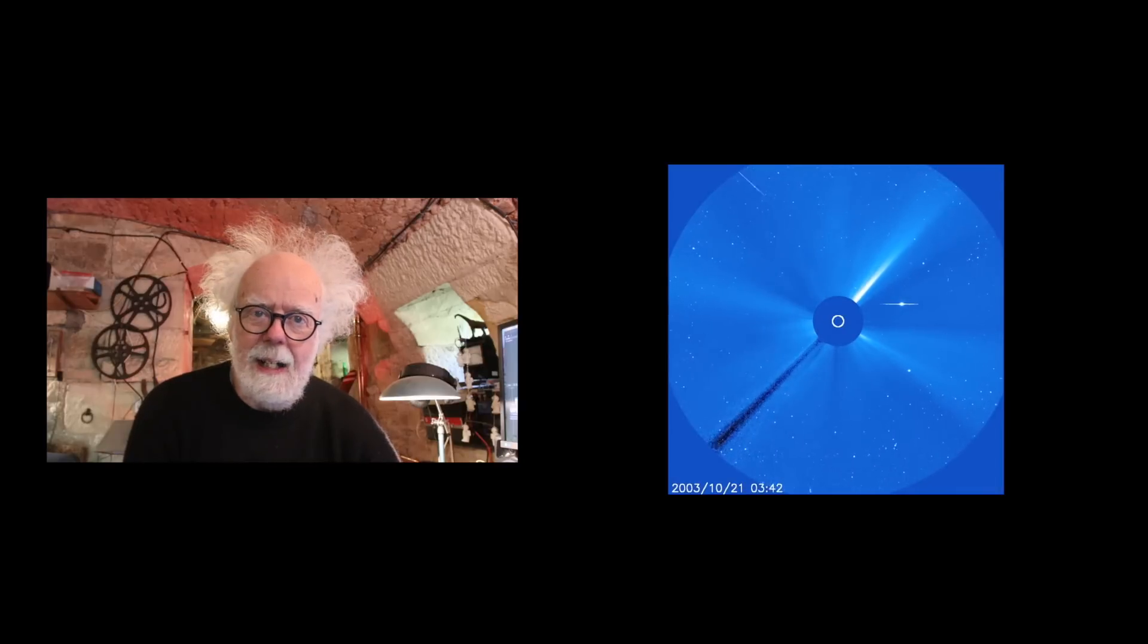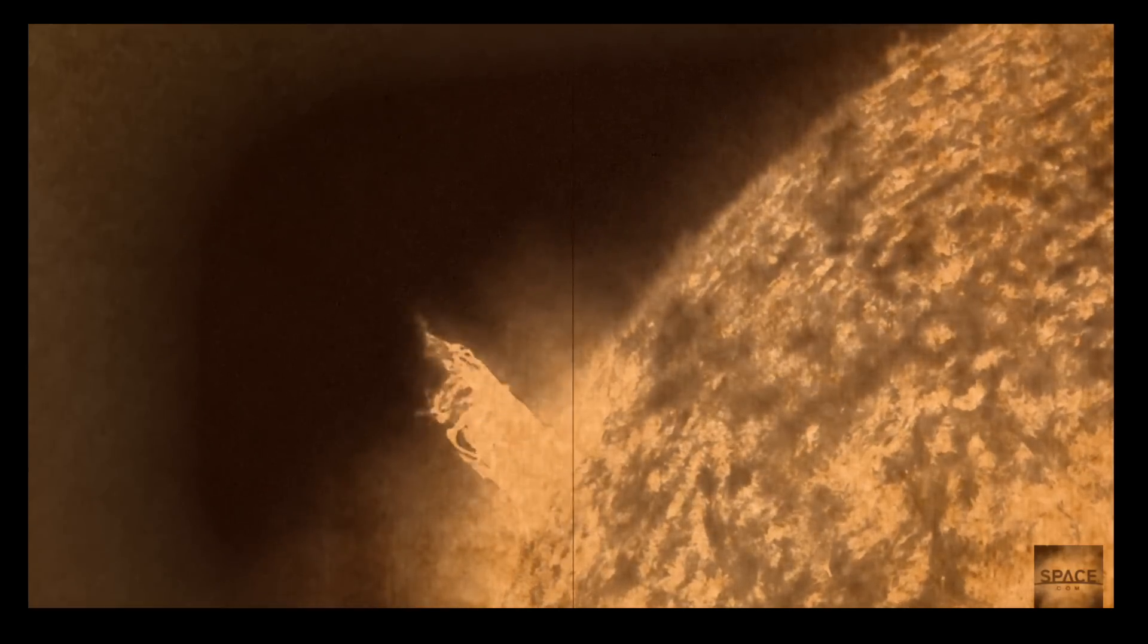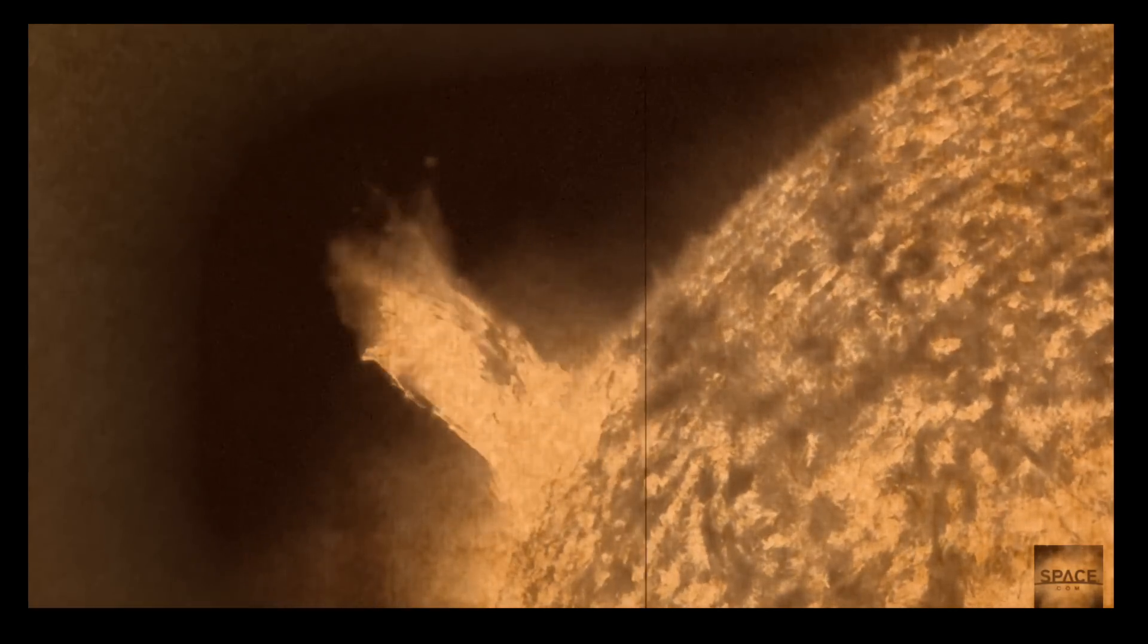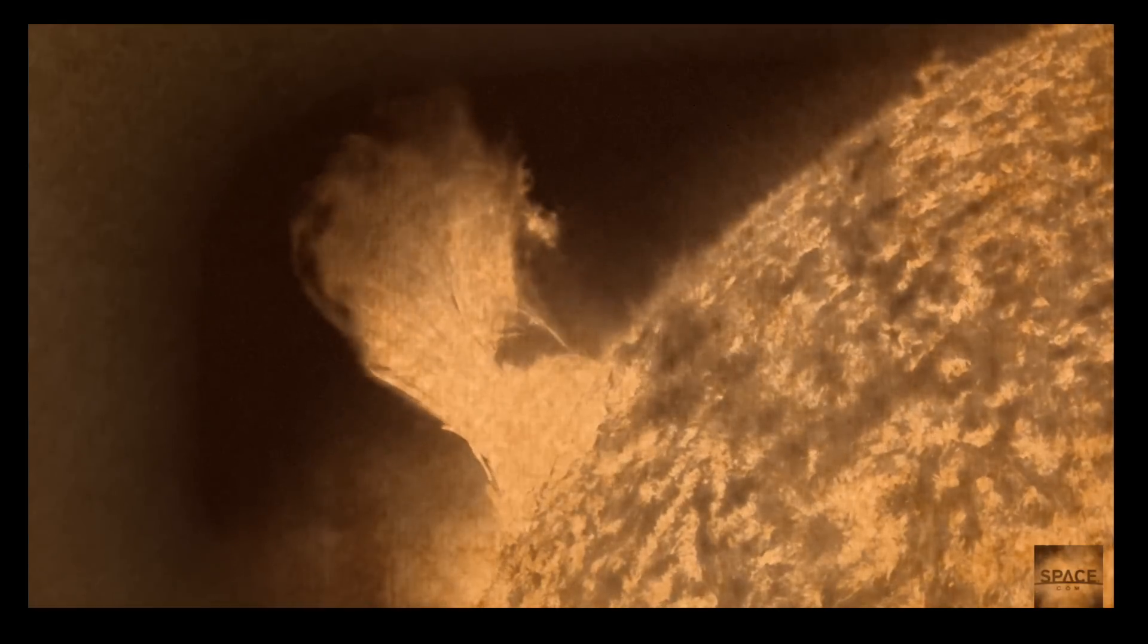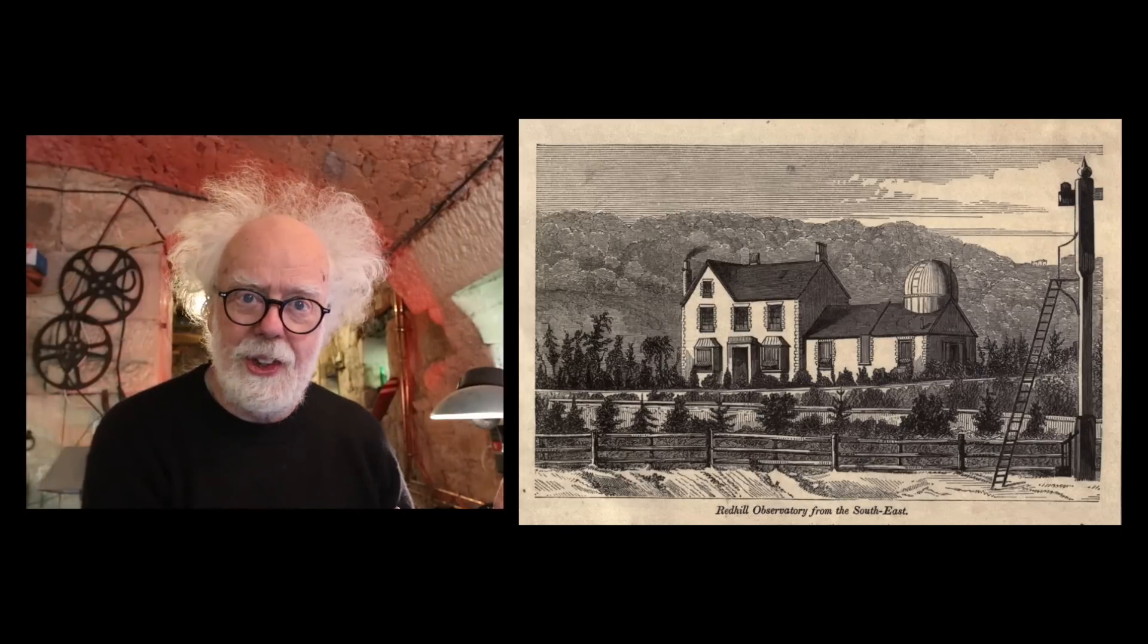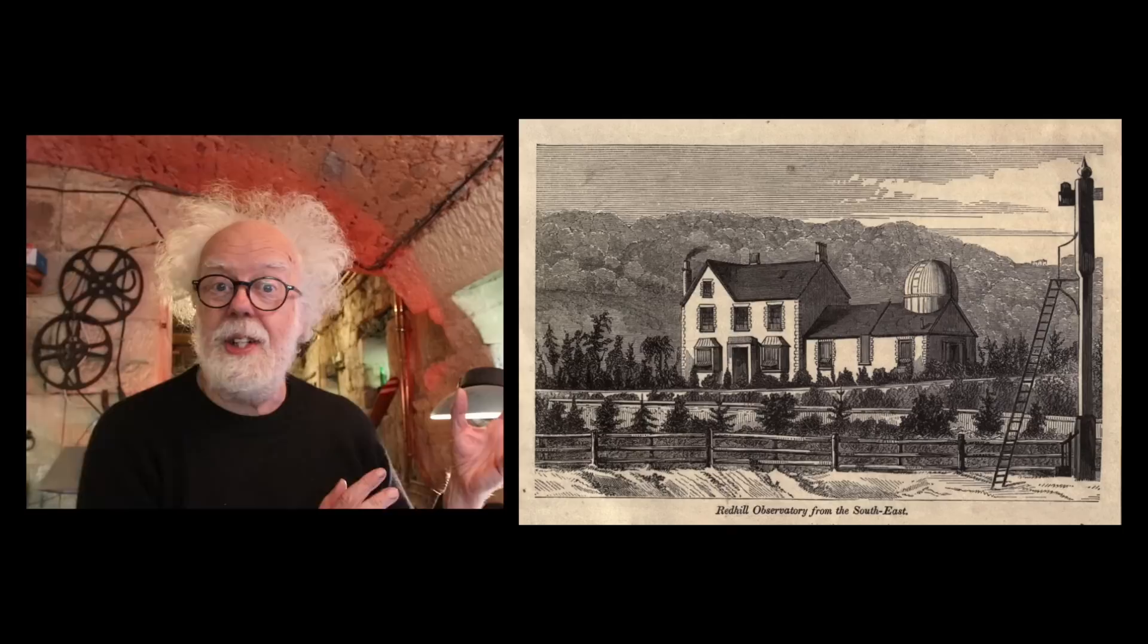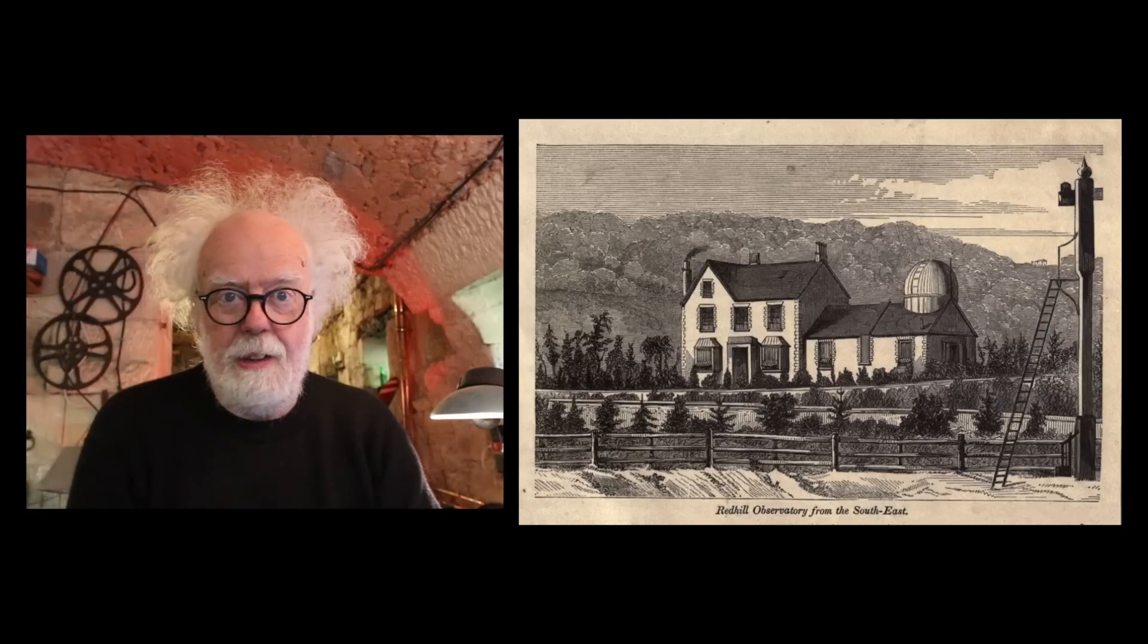And that happened on the 1st of September 1859. The Carrington event. Why is it Carrington? Well it was named after Richard Carrington. Richard was a British astronomer who worked from home. Look at this amazing place he lived in just south of London with that dome on the roof. Lucky Richard.